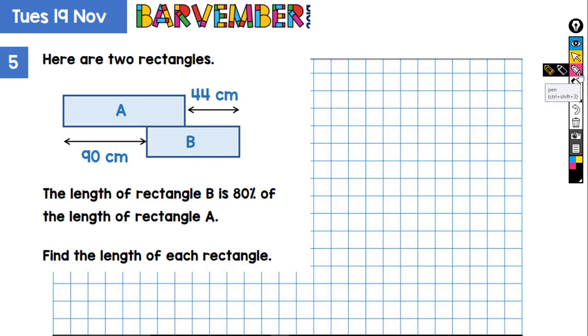If bar models could be cute, I think this is a cute one or this is a cute question. Let's have a look. Here are two rectangles. We've got the length of rectangle B is 80% of the length of rectangle A.